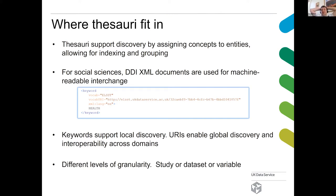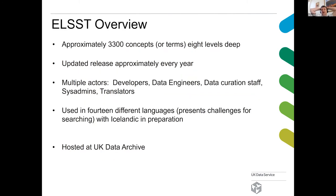ELST as a thesaurus has approximately 3,300 individual terms that go down about eight levels as a tree structure. We update a new version of ELST with some new additions and some deprecations about once a year. As a bit of background to thesaurus development: it's not just about coders and programmers — there are lots of different actors involved. Data curation staff use keywords on a daily basis to assign to metadata; sys admins; and in the case of ELST, where we currently have 14 languages, we have a team of translators who work remotely to translate terms from English into the target language. Icelandic is coming soon as well. So we have a diverse, really interesting and enthusiastic user community that supports and develops ELST.